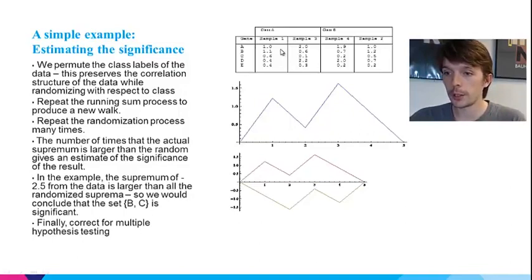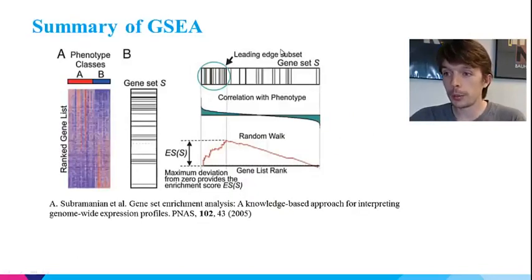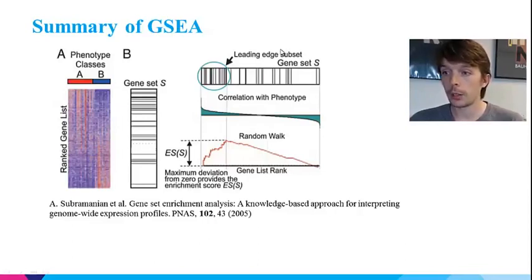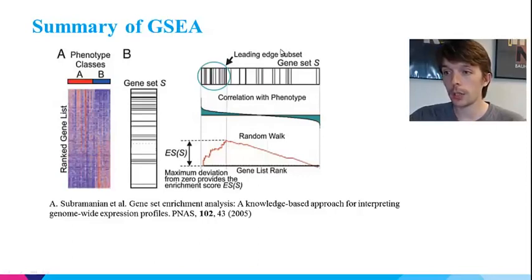In gene set enrichment analysis, we usually test many gene sets, so the final step is to correct for multiple hypothesis testing. Here is a figure taken from one of the original papers which proposed this popular method. The figure illustrates the main elements when applied to a microarray with a realistic number of genes. The heat map in A shows the genes ranked according to their differential expression across the phenotype classes, which might be diseased or non-diseased. Just to the right of that is a part of the figure that looks like a barcode — here the authors have indicated the positions of the genes in the test set in the ranked list with black horizontal lines. This is replicated horizontally on the right with an illustration of the walk down the ranked list.